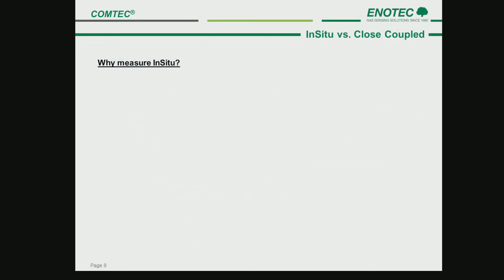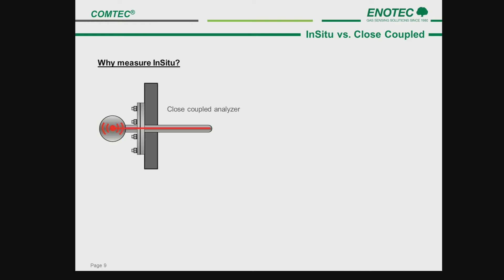So why does Enotec measure in situ? What are the benefits? Most manufacturers on the world market produce O2 COE analyzers which measure close-coupled, sometimes referred to as quasi in situ. These analyzers have sensors installed in the terminal box of the probe outside of the process and need to control the pressure, temperature, and contaminants within the terminal box. The sample gas is sucked from the process to the sensors, usually with an aspirator. The filters will block in dusty applications as the suction force is particulate into the filter pores.